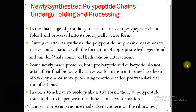Some newly made proteins, both in prokaryotes and eukaryotes, do not attain their final biologically active conformation until they have undergone some alteration or modification. These modifications and changes in protein structure made after synthesis on the ribosome are known as post-translational modification. The new polypeptide must fold into a proper three-dimensional conformation through this processing reaction.